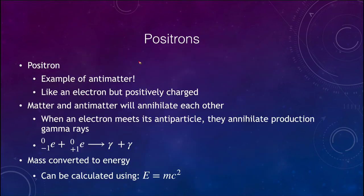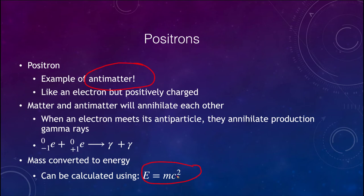A positron is actually an example of antimatter. It's exactly like an electron but has a positive charge. When matter and antimatter come together, they will annihilate each other and convert into pure energy — the matter disappears and the mass is converted to energy. The amount is given by Einstein's equation, E equals mc squared, where c is the speed of light. So a very small amount of mass can give you a large amount of energy.